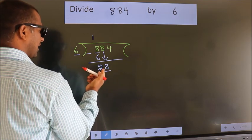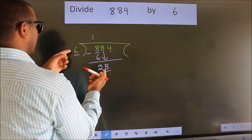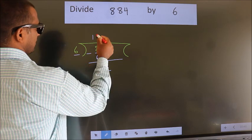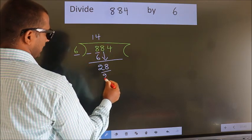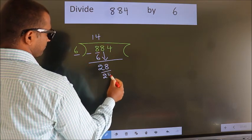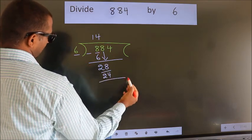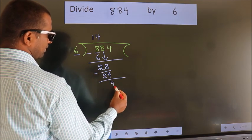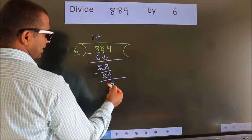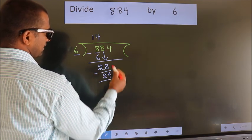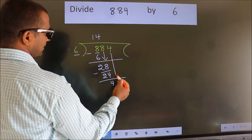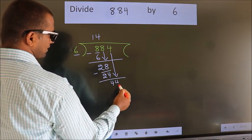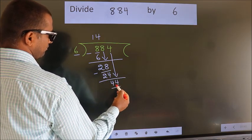A number close to 28 in the 6 times table is 6 fours, which is 24. Now we subtract — we get 4. After this, bring down the beside number. So, 4 comes down, giving us 44.